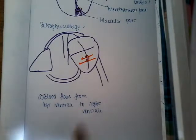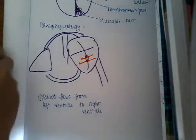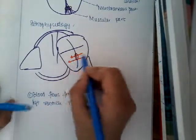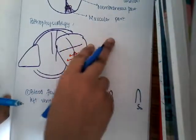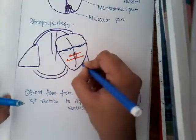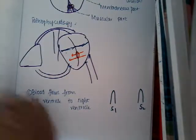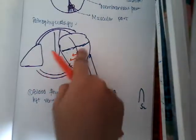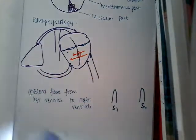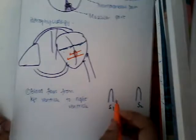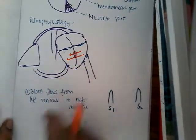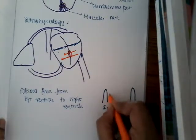During systole, blood flows from the left ventricle to the right ventricle. At this point — between S1 and S2 — the tricuspid and bicuspid valves are closed and the semilunar valves are open. Some blood also flows through the defect from left to right ventricle, forming a murmur. Since this murmur is present throughout systole, it is called a pan-systolic murmur.